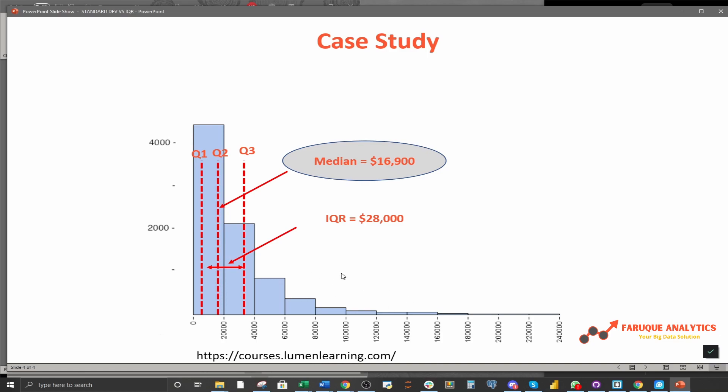In short, whenever you have data set distribution that are reasonably symmetrical to the central peak, then use standard deviation method. Any other skewed distribution will be better off using the IQR method. Hope this sheds some light on this dilemma. Thanks for watching.